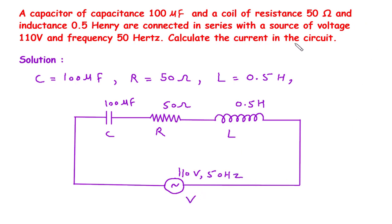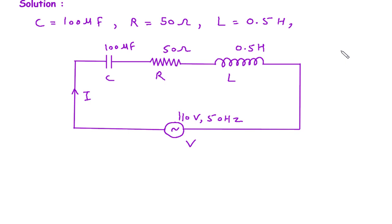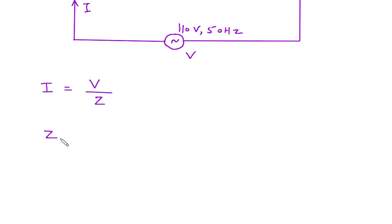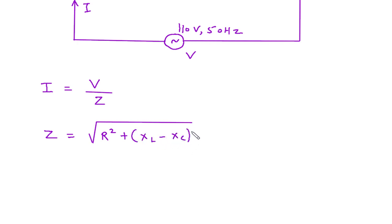Now calculate the current I in the circuit. To find current I, first we have to find the value of impedance Z. We have the value of voltage V, and according to Ohm's law, current I = V/Z. Impedance Z = √(R² + (XL − Xc)²).